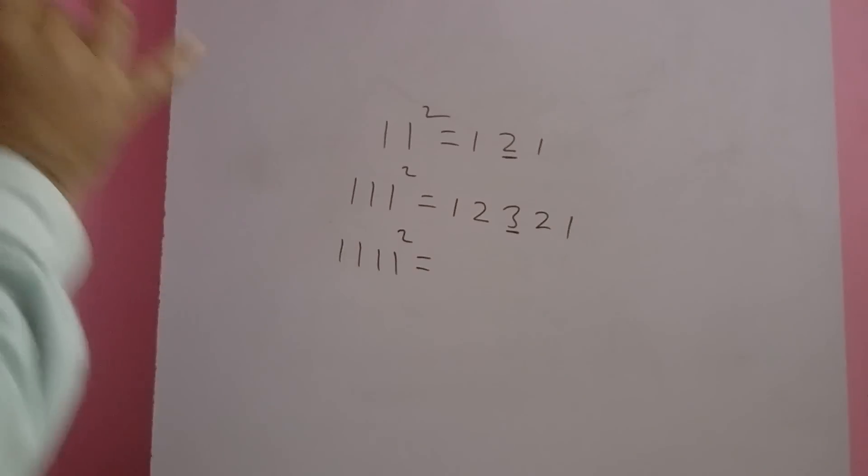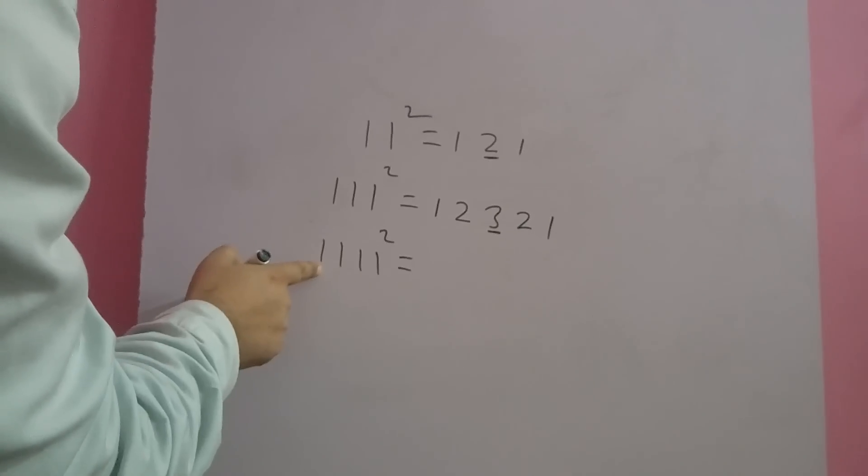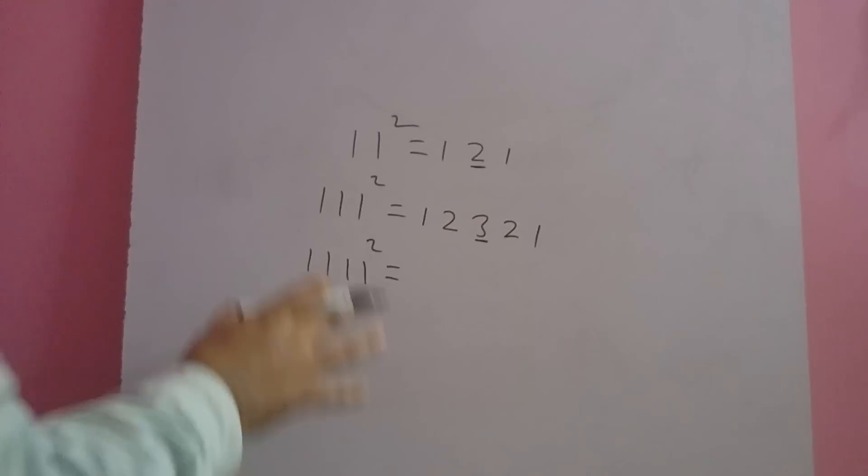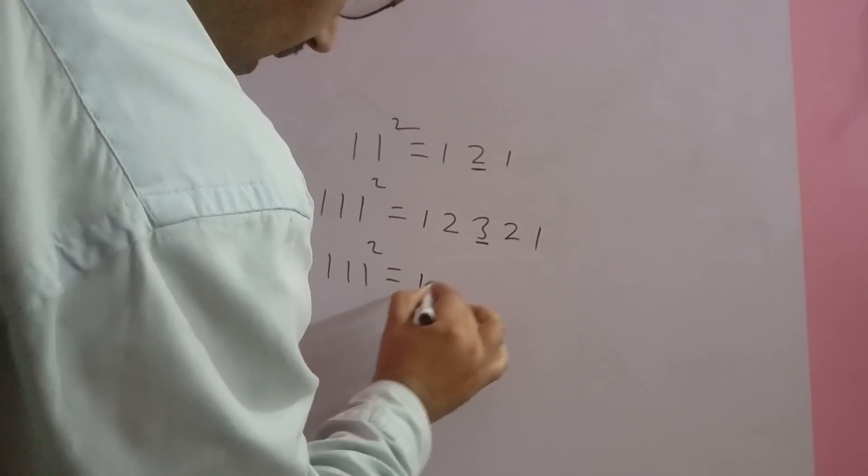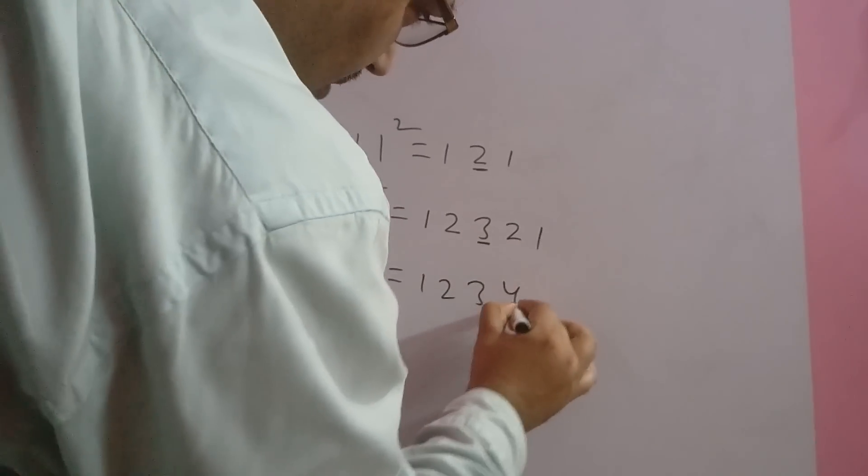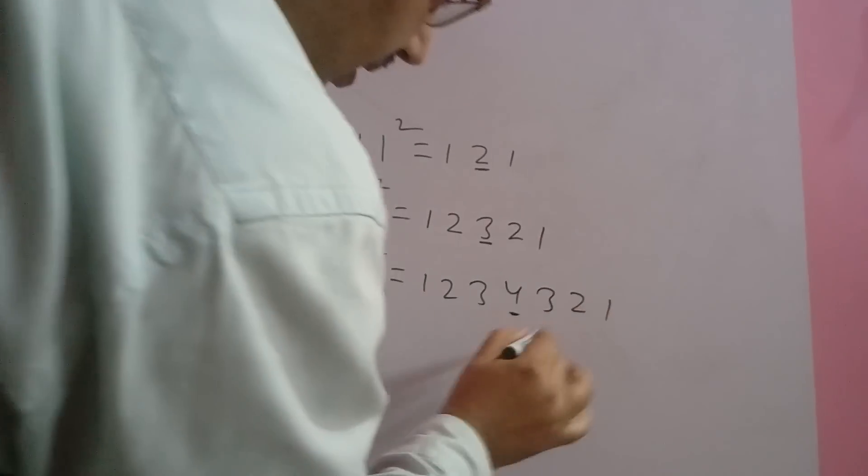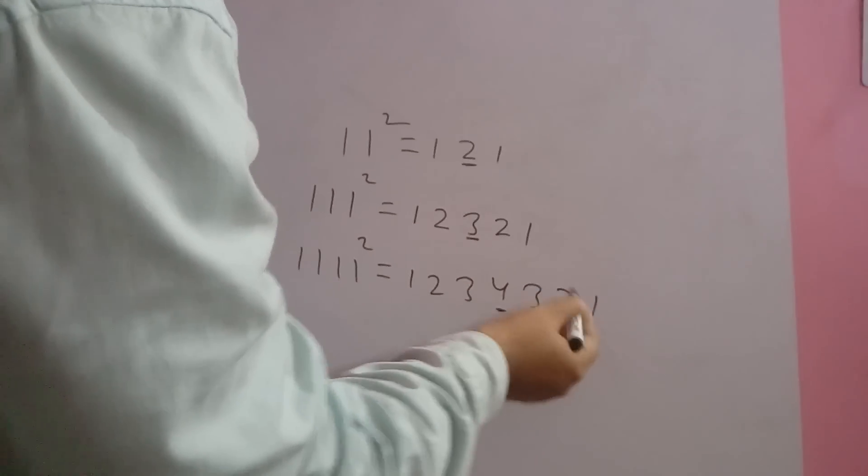Again, 1111 square. We count number of ones. Number of ones is 4, so the maximum number for this question is 4. We have to start 1, 2, 3, 4, and come back 3, 2, 1, up to 1. So 1, 2, 3, 4, 3, 2, 1.